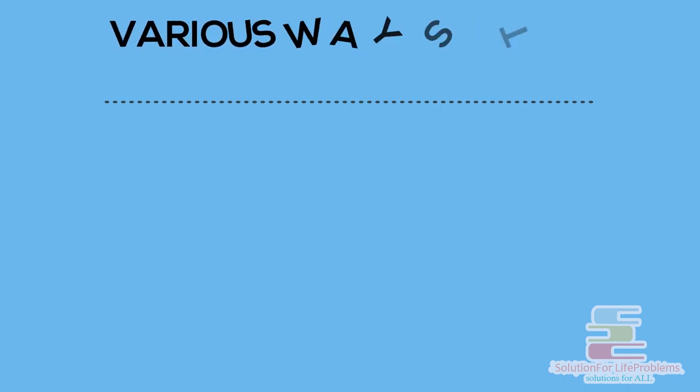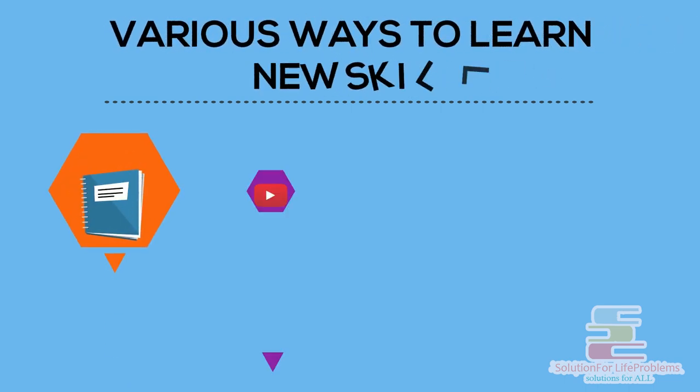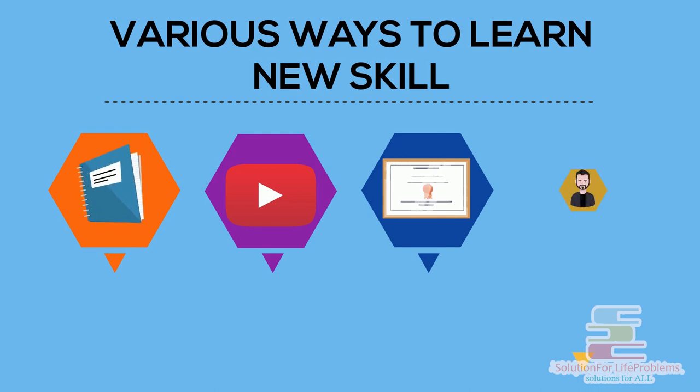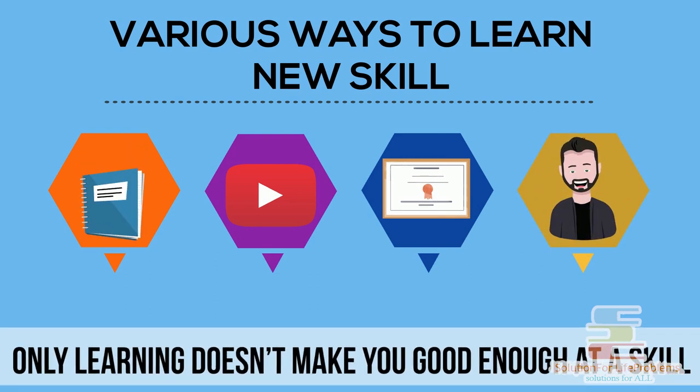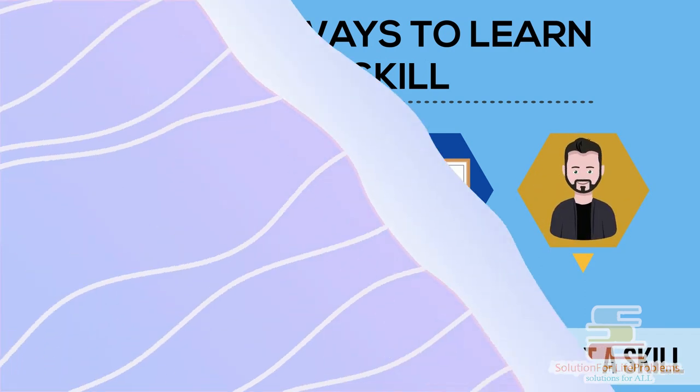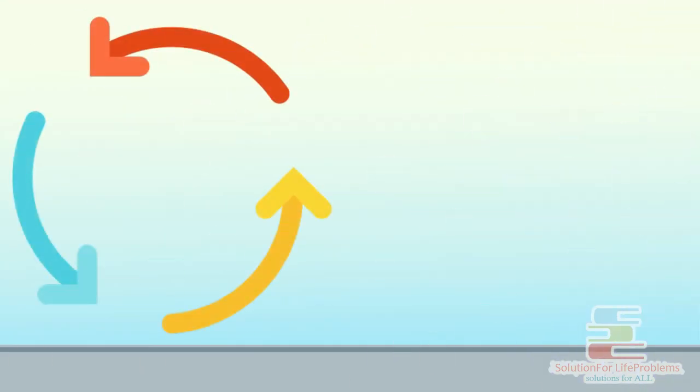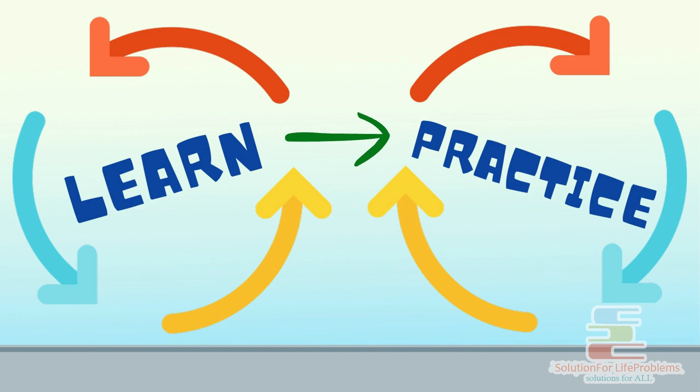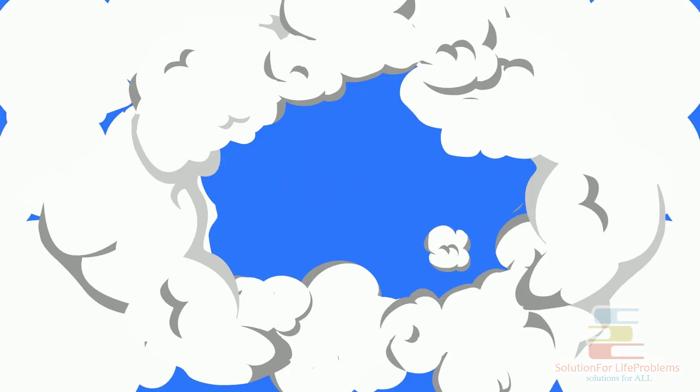There are various ways to learn a new skill. You can learn from books, videos, online courses or by a mentor. But only learning doesn't make you good enough at a skill. You have to get out of the learning loop and start practicing too. It is always better if you have a certain goal in your mind before you start learning.